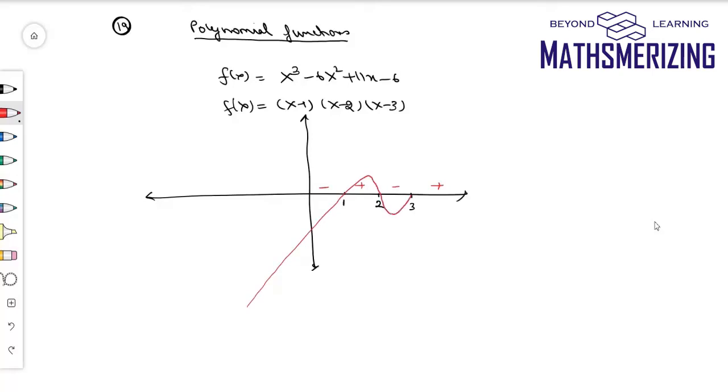So this graph will start from minus infinity, then it will pass through 1 and it will take its maximum value. Then it will pass through 2, it will take its minimum value, and then it will go towards infinity. So that is the basic graph of this function (x-1)(x-2)(x-3).